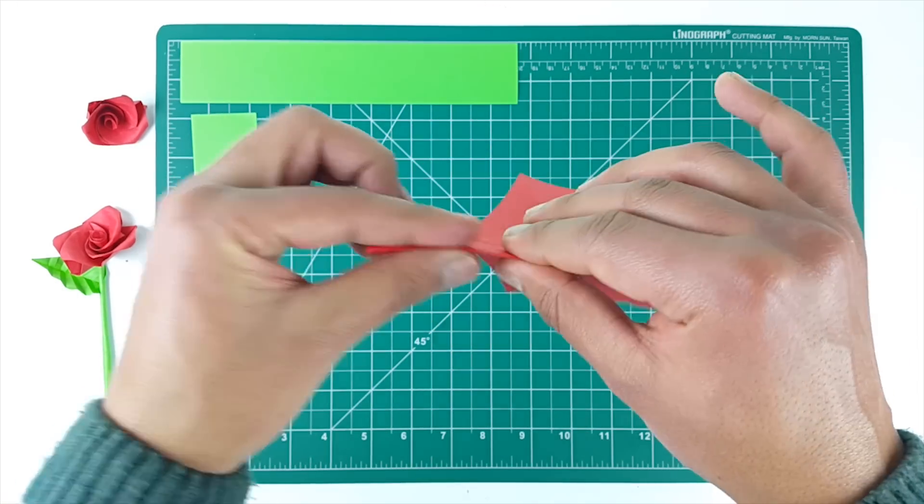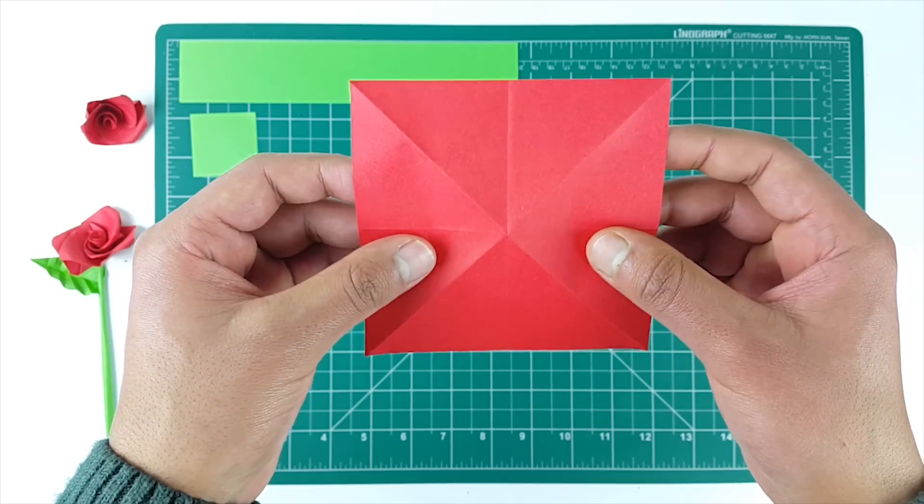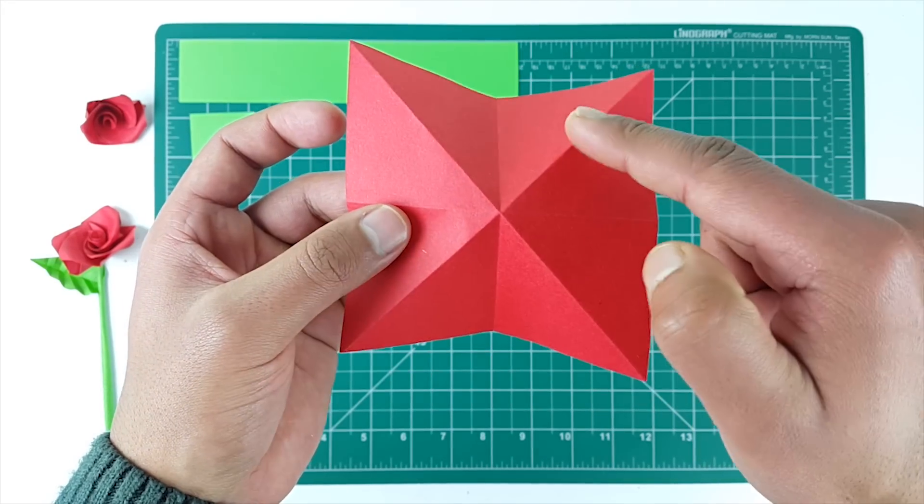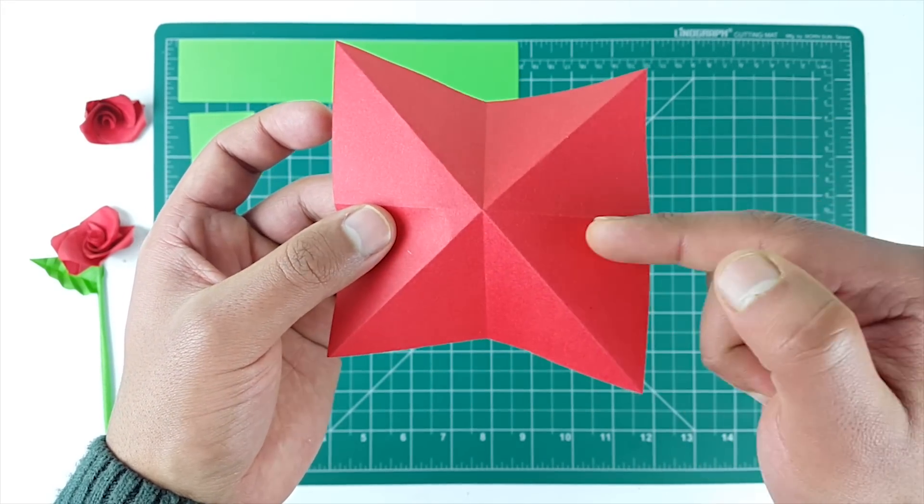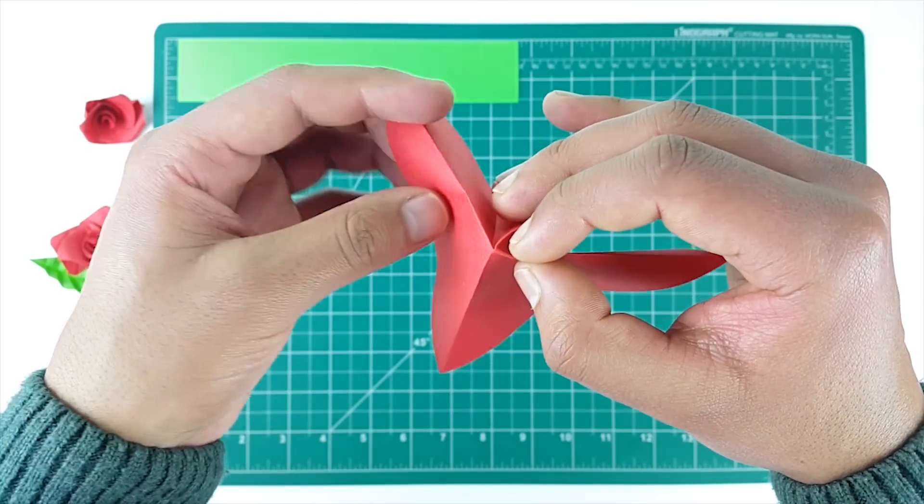Now we will need mountain creases on the diagonals and valley creases on the sides. As you can see there are mountain or outward creases on the diagonals, while there are inward creases on the sides. So just press it and we will get this triangular shape.